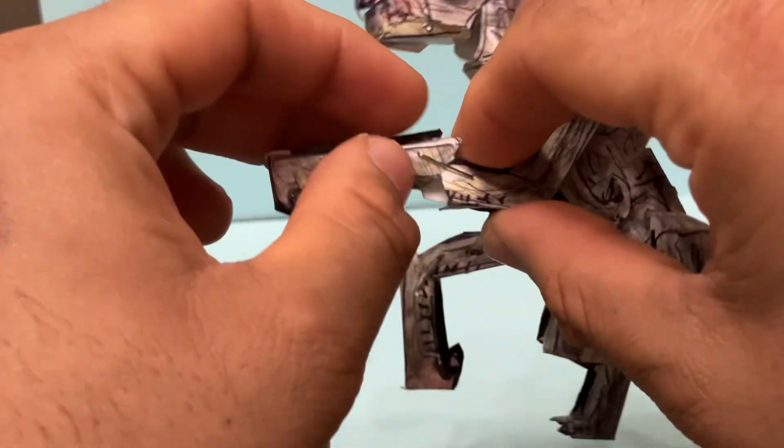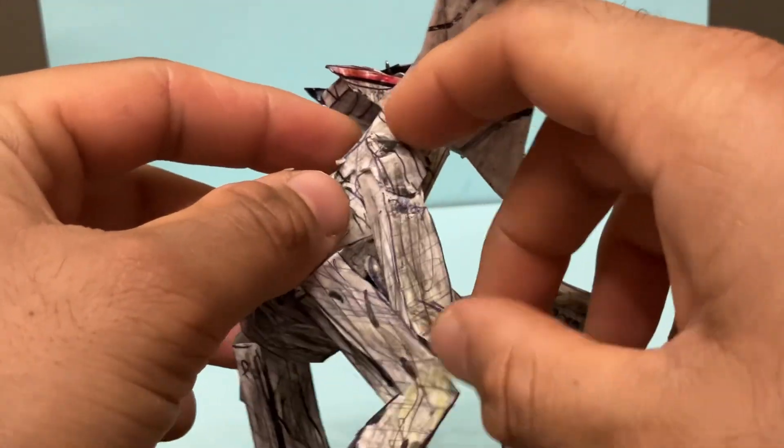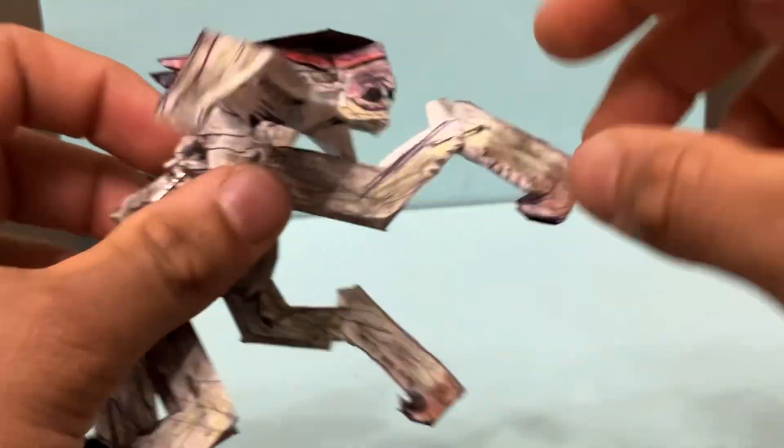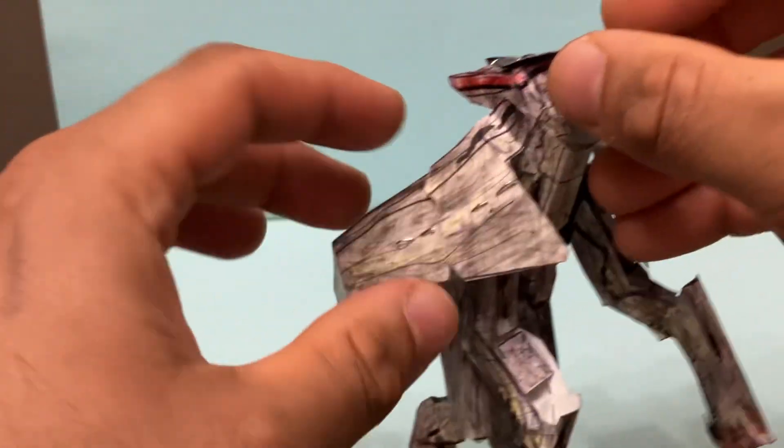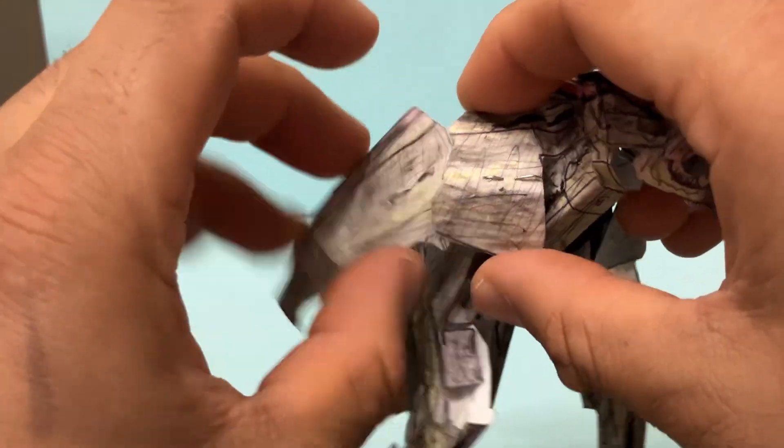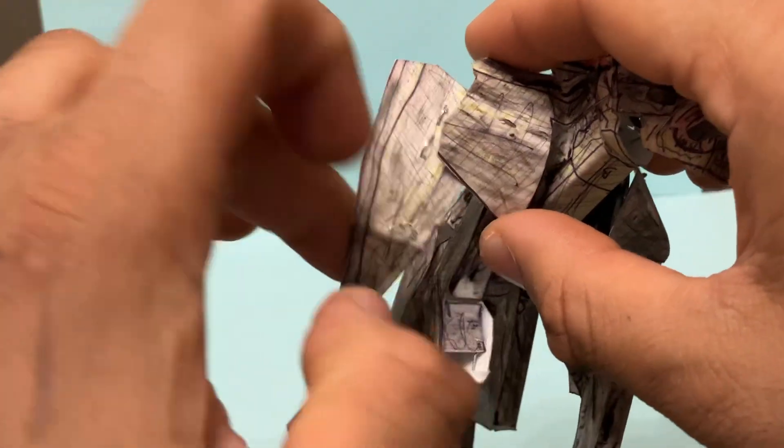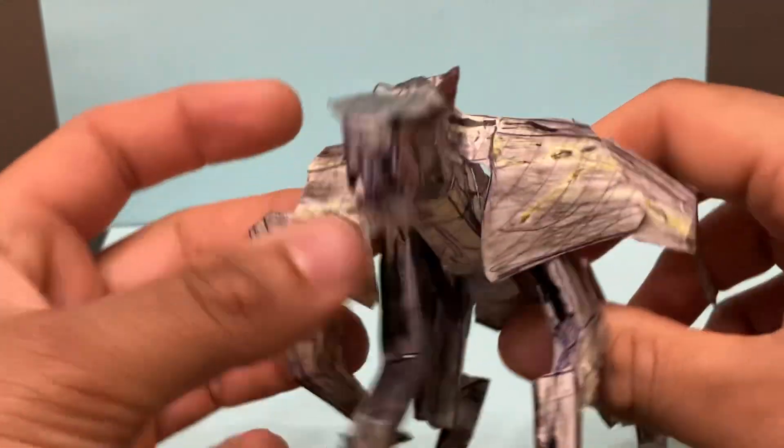The arms here are on a swivel so you can move them forward and back, and there's also articulation on this point of the arm. Same thing on the other side. You can move the arms, kind of hindered by the wings, but you can still pose it. The wings have a joint here so you can fold down the wings or have them displayed up like that.